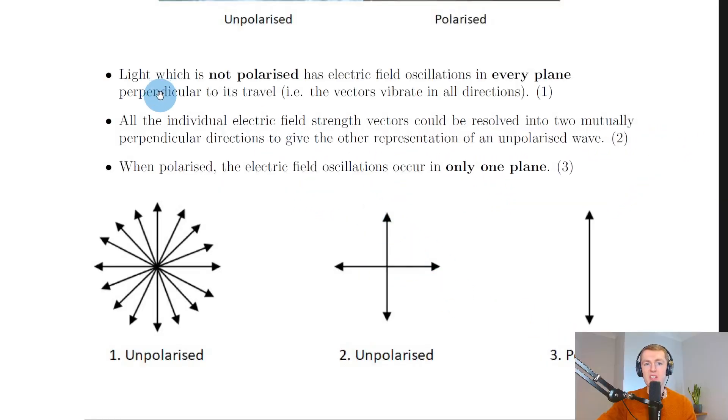Looking back at the notes, it says here that light which is not polarised has electric field oscillations in every plane perpendicular to its travel, i.e. the vectors vibrate in all directions. So down on the left hand side here, we have what unpolarised light would look like. And some examples of unpolarised light would be sunlight and light from a bulb or lamp.